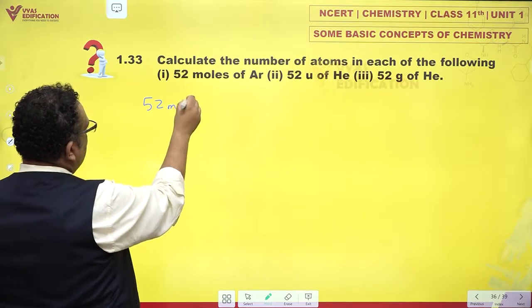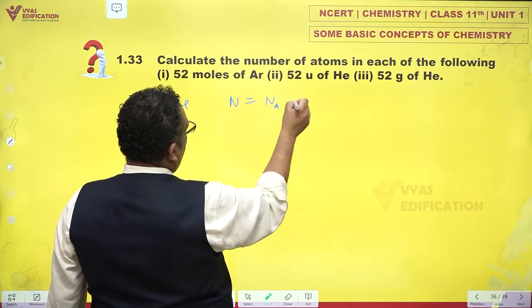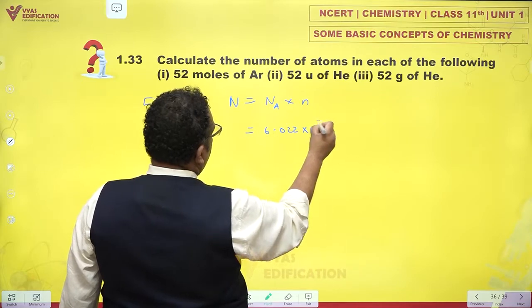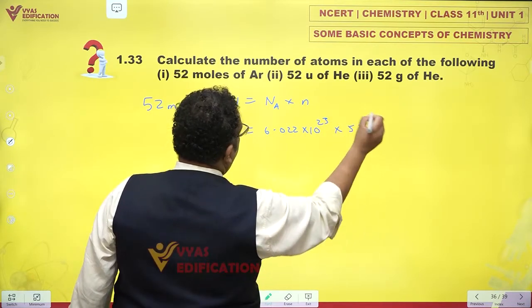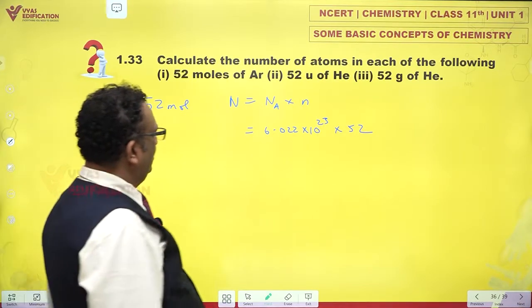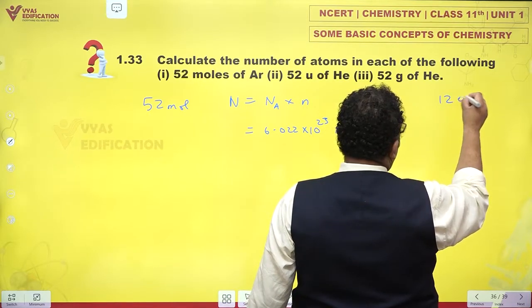First of all, 52 moles of argon. The number of atoms N is Avogadro's number times number of moles: 6.022 × 10^23 times 52. So what do I need to do? Just multiply by 52, that's not very difficult.